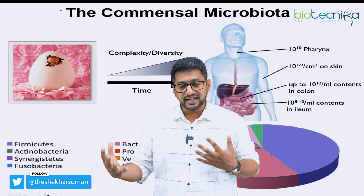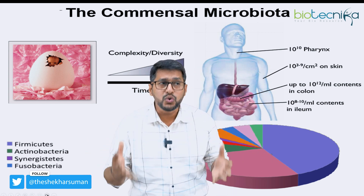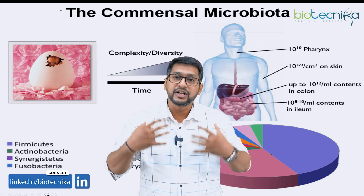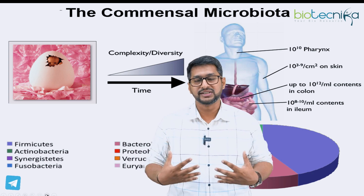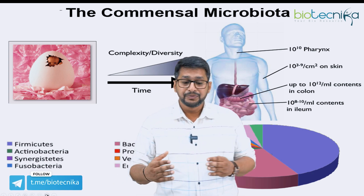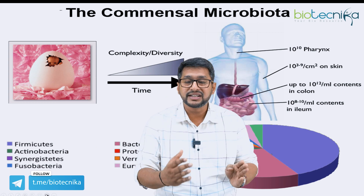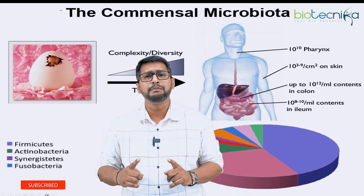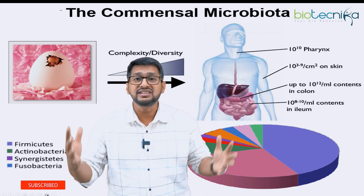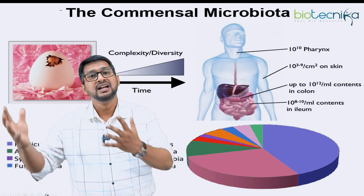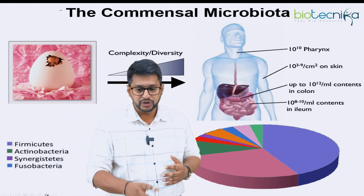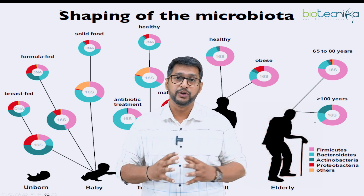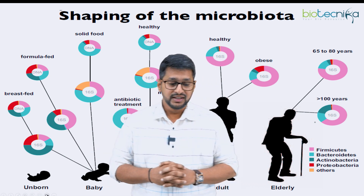There is a huge amount of complexity and diversity between the gut microbiome and homo sapiens, and with respect to time this complexity and diversity actually changes. This affects the entire genetic, physical, and physiological makeup of a human being. This process is called the shaping up of the microbiome or the shaping up of the microbiota.